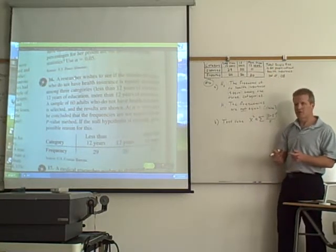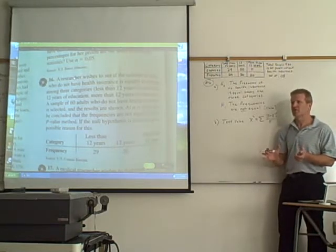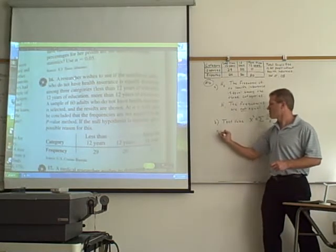So the way we're going to figure that out is we're going to use the p-value method, which means we don't have to find a critical value like we do with the traditional method. We just go straight to the test value. So we're going to find our chi-squared test value.